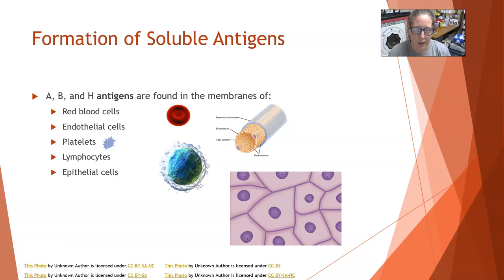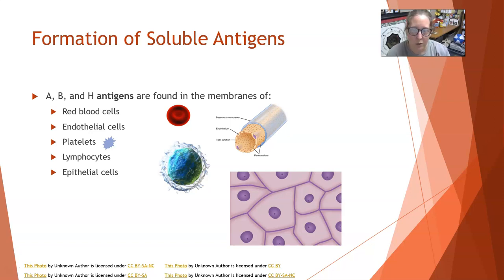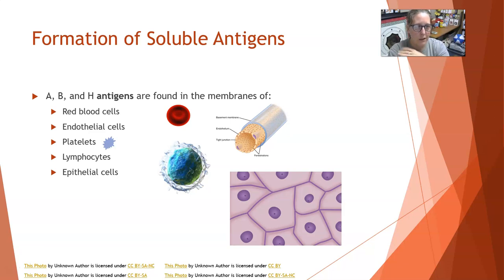AB and H antigens are found in the membranes of red blood cells, endothelial cells, which are the lining cells of capillaries in your blood vessels. They're also found in platelets, in lymphocytes, some of your white cells, and also in epithelial cells — like lining everything: your skin, the inside of body cavities, et cetera.